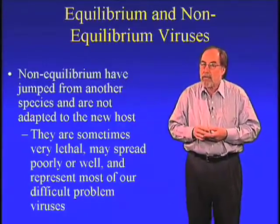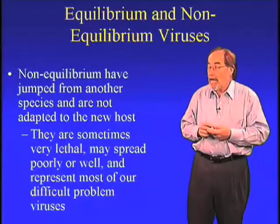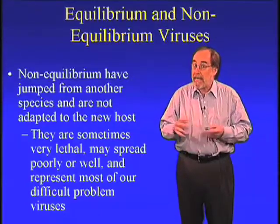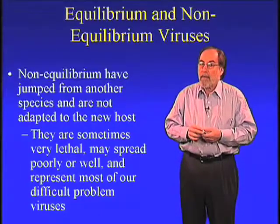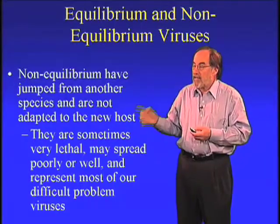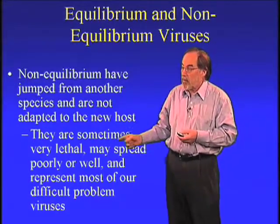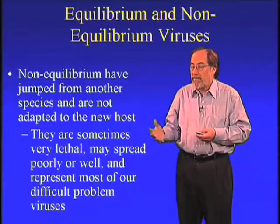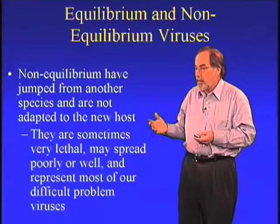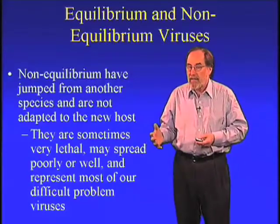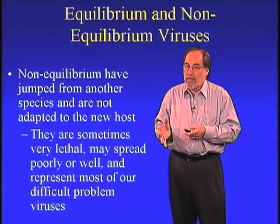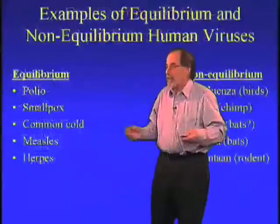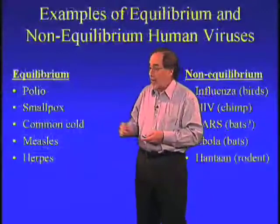Most of the viruses on that slide that I showed you are non-equilibrium viruses, like Marburg and Ebola and HIV. HIV has developed the ability to spread well, whereas something like Ebola virus spreads very poorly, and in fact tends to make its infected people so sick so fast that they can only transmit to very close family members or to health care providers. So let's look at some equilibrium and non-equilibrium viruses.